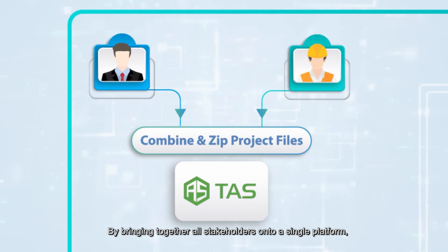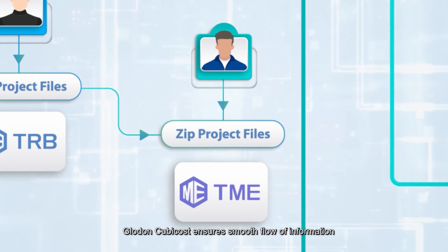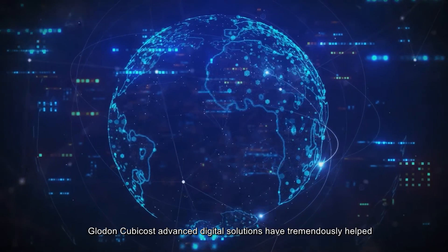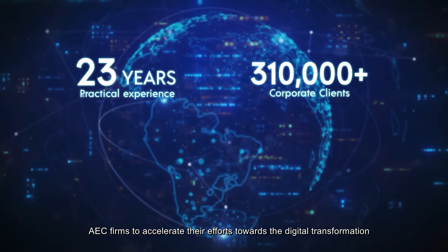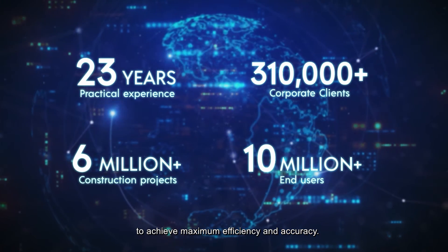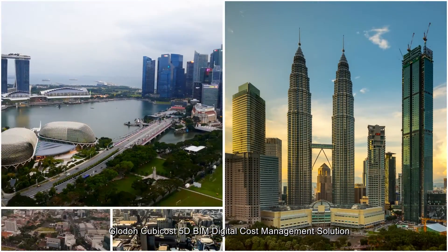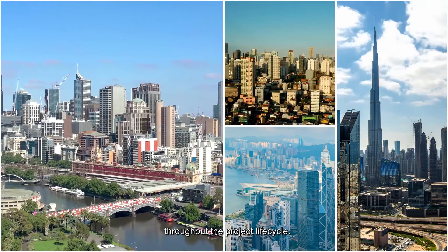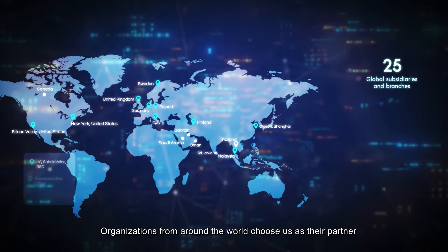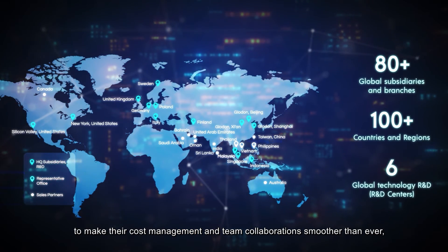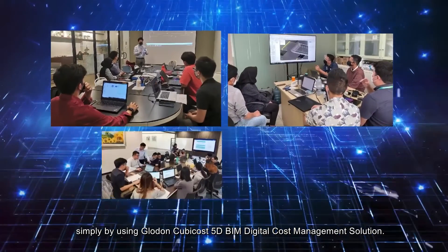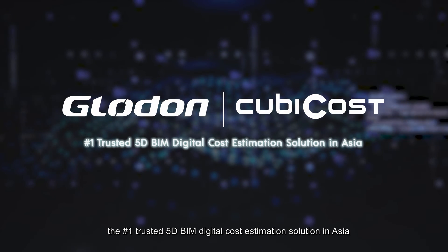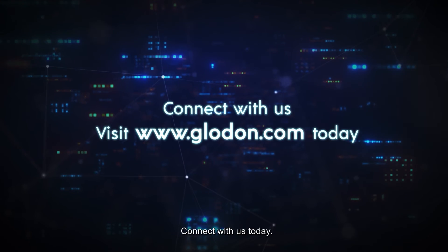By bringing together all stakeholders onto a single platform, Gloden QBiCos ensures smooth flow of information and streamlined work processes between team members. Gloden QBiCos Advanced Digital Solutions have tremendously helped AEC firms accelerate their efforts towards digital transformation to achieve maximum efficiency and accuracy. Gloden QBiCos 5D BIM Digital Cost Management Solution has been a cornerstone of the construction industry and provides complete support to users throughout the project lifecycle. Organisations from around the world choose us as their partner to make cost management and team collaboration smoother than ever. Gloden QBiCos — the number one trusted 5D BIM Digital Cost Estimation Solution in Asia. Connect with us today.